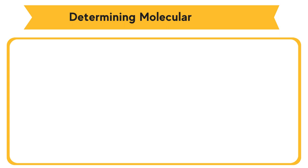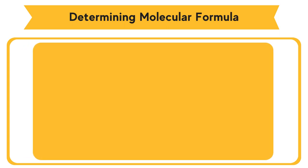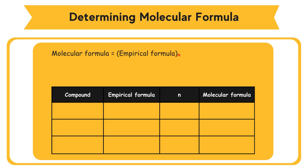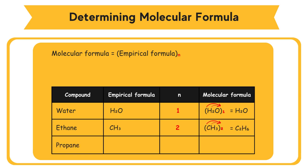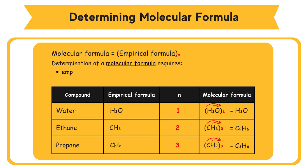Determining Molecular Formula. Molecular formula is a multiple of empirical formula, where n is an integer. Molecular formula equals empirical formula × n. For example: water, empirical formula H₂O, n = 1, so molecular formula = H₂O. Ethane, empirical formula CH₃, n = 2, so molecular formula = C₂H₆. Propane, empirical formula CH₂, n = 3, so molecular formula = C₃H₆. The determination of a molecular formula requires its empirical formula and its relative molecular mass or molar mass.